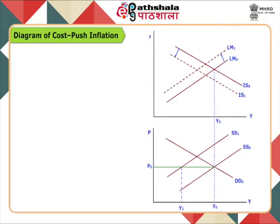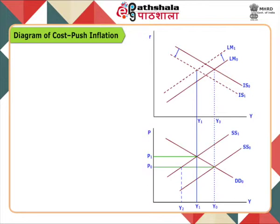Due to the shift in both IS and LM curves, a new equilibrium is established at Y1 level of output. In the lower panel, aggregate demand decreases as a result of the price level increase along demand curve DD0. As price level increases, aggregate supply increases along supply curve SS1, and new equilibrium is established at Y1 with price level P1. All markets clear at this equilibrium. Hence, when there is cost-push inflation, there is a reduction in the level of output, in contrast to demand-pull inflation where output rises.